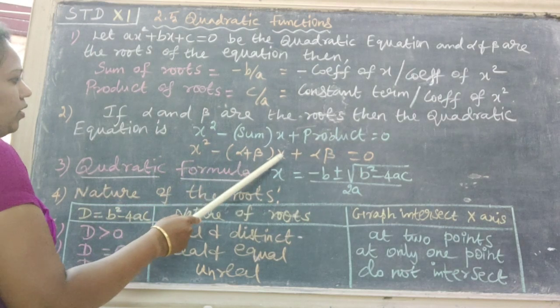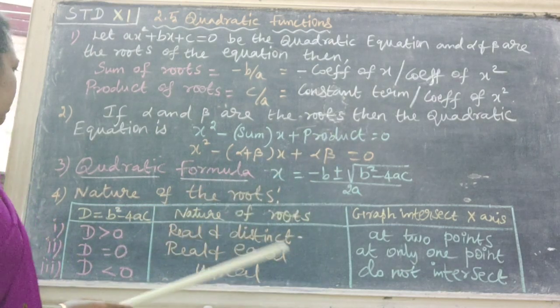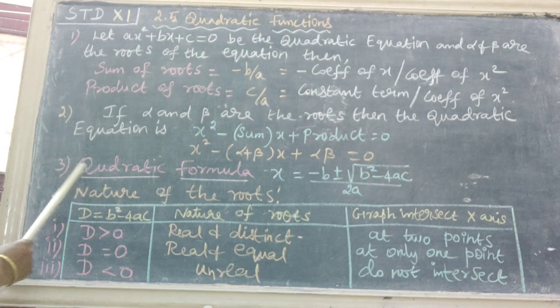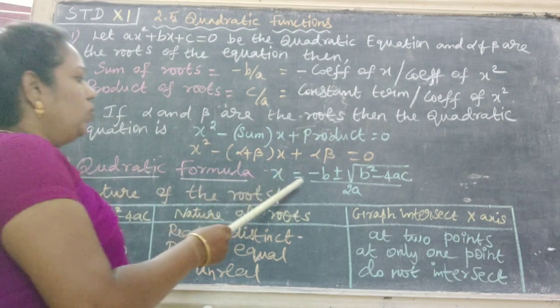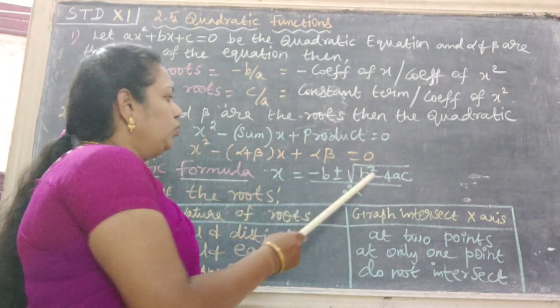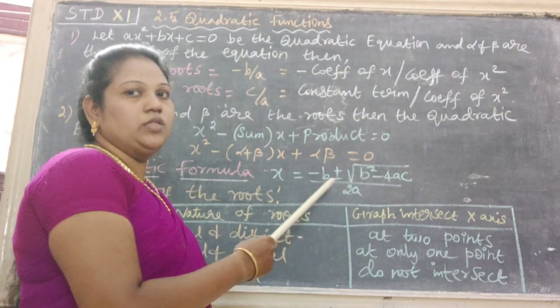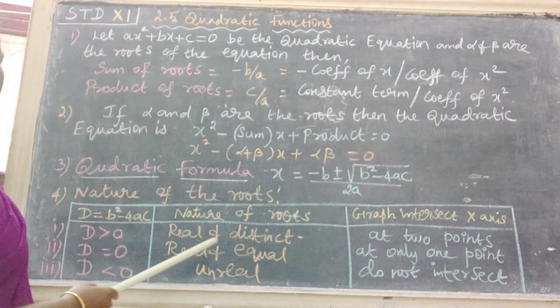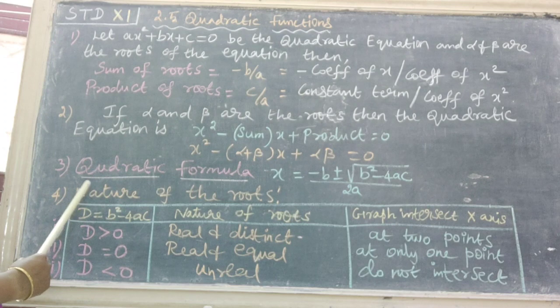Third one is the quadratic formula: x = (-b ± √(b² - 4ac))/2a. And finally, fourth one is the nature of the roots.